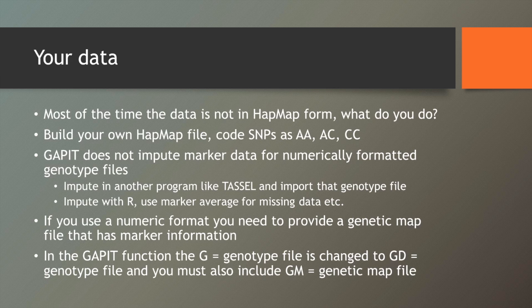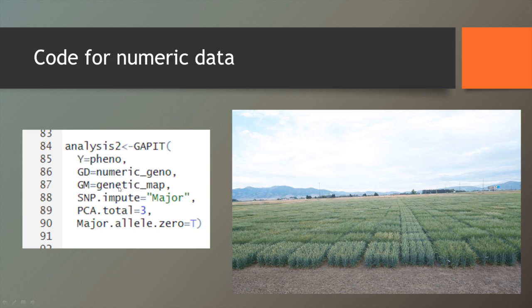So if you supply it with numerically formatted genotype data, you have to provide the genetic map in a separate file. And then down here, finally, in the GAPIT function, the parameters will change. Instead of a G, it changes to a GD to signify to GAPIT that it's a numerical type genotype file, and then also a GM for genetic map. And here's just a brief picture of code that you would use for running as numeric data. You can see the GD for numeric genotype, GM for genetic map, and everything else has stayed the same.